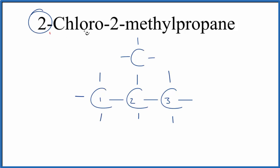Also on the second carbon, we have a chloro group, so we'll put a Cl here. And this is the structure for 2-chloro-2-methylpropane.